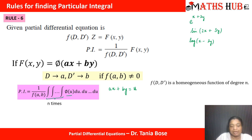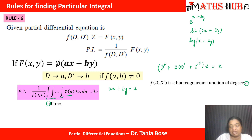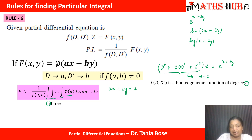After replacing, for the right hand side function we substitute ax plus by equal to u, so the function becomes phi(u), and we integrate this function n times. Here n means that your denominator function f(DD') is a homogeneous function of degree n. So if the denominator is a homogeneous function of degree 2, you integrate twice; degree 3, integrate thrice; degree 1, integrate once.